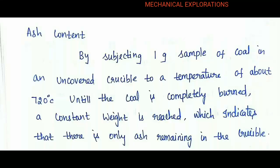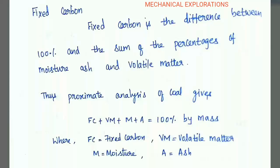Coming to ash content: by subjecting 1 gram of sample of coal in an uncovered crucible to a temperature of about 720 degrees Celsius until the coal is completely burned, a constant weight is reached, which indicates that there is only ash remaining in the crucible. This is known as the ash content in coal.